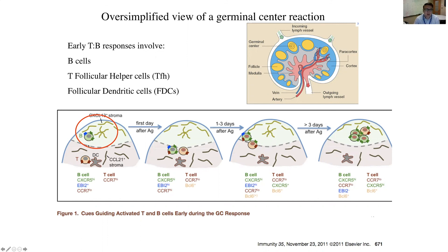B cells with high expression of CXCR5 interact with CXCL13-expressing stroma in the follicle, encountering antigen on the stromal surface. This causes upregulation of CCR7, pushing the B cell from the B cell follicle to the T-B border. At the T-B border, the B cell interacts with a T cell, then downregulates CCR7 and returns to the B cell follicle to form a germinal center. Simultaneously, the T cell upregulates BCL6 — the master transcription factor for T follicular helper cells.